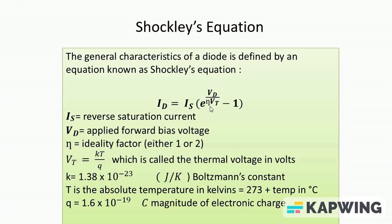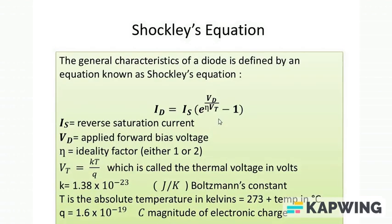It is exponentially related, e raised to the power Vd (the applied voltage Vd) upon eta Vt. Eta is the ideality factor, a constant which depends on the physical construction of the diode—that means what type of material is being used in preparing the diode, for example germanium or silicon. This Vt, the thermal voltage in volts, can be calculated if we know kT by q. k is Boltzmann constant, joule per kelvin.